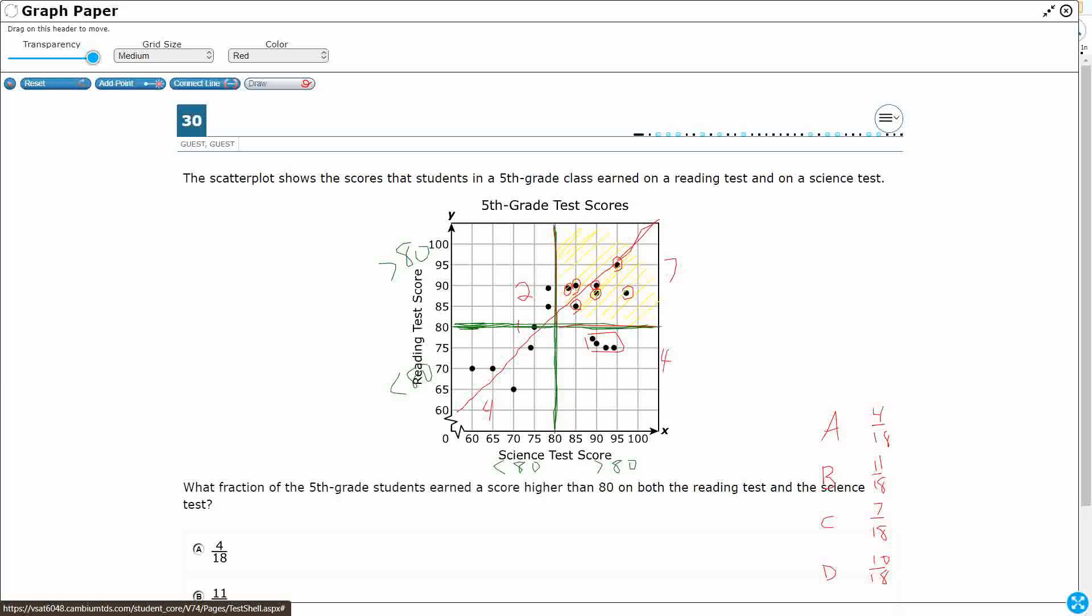So if I'm going to make this a fraction, obviously my numerator needs to be how many kids fit that description, greater than 80 on science, greater than 80 on reading. So that's going to be seven, and then everyone says 18. So I'm hoping 18 is seven plus four is 11, plus two is 13, plus one is 14, plus four is 18. Okay. So that's where they get their 18. They're just counting all the dots, which is what they should do.